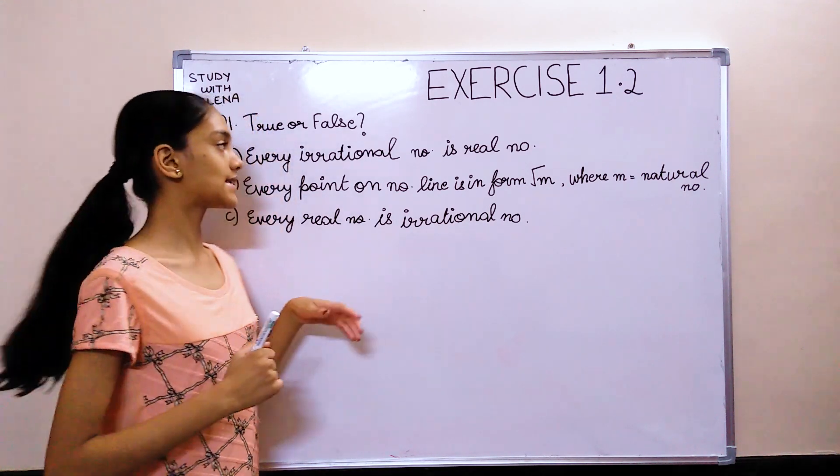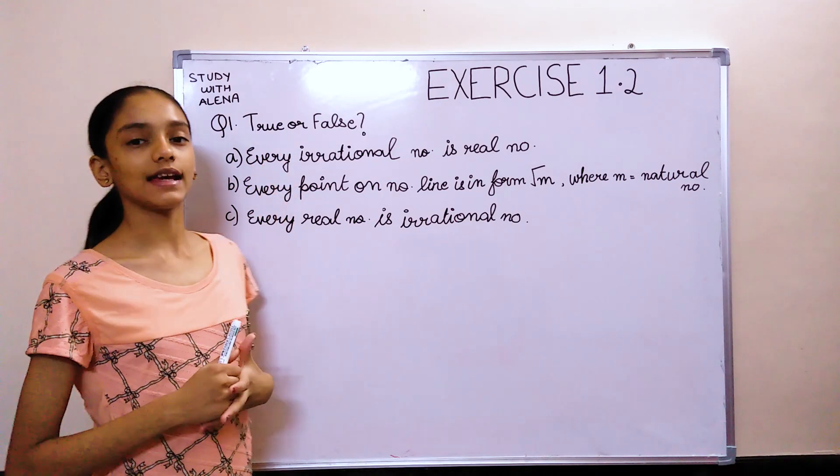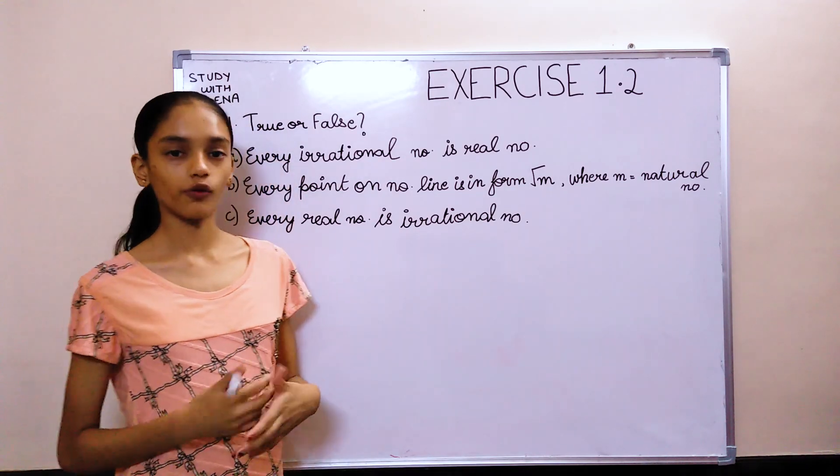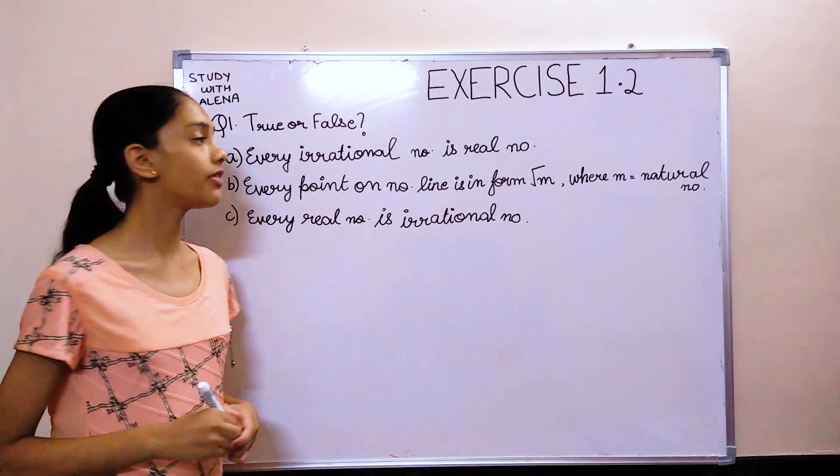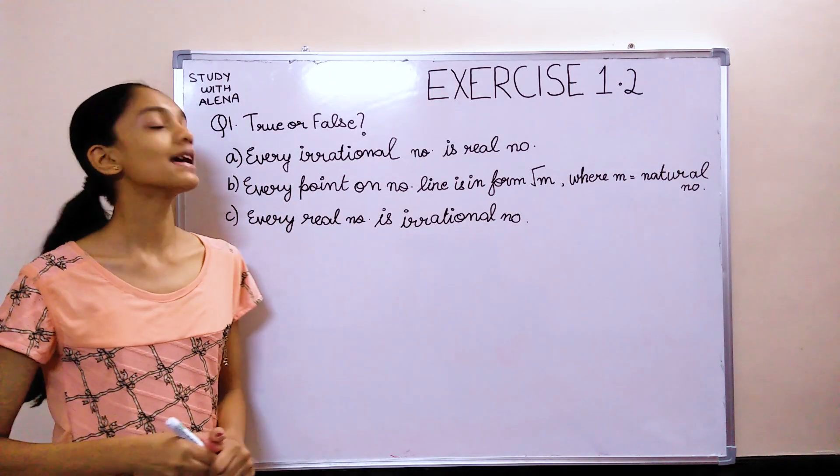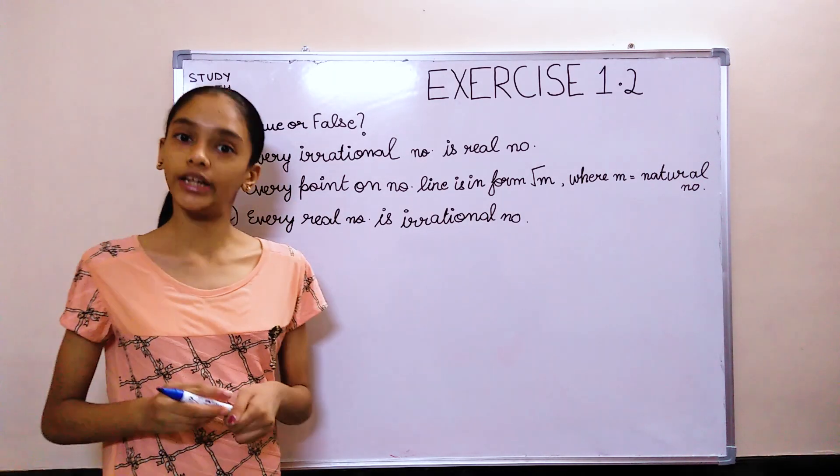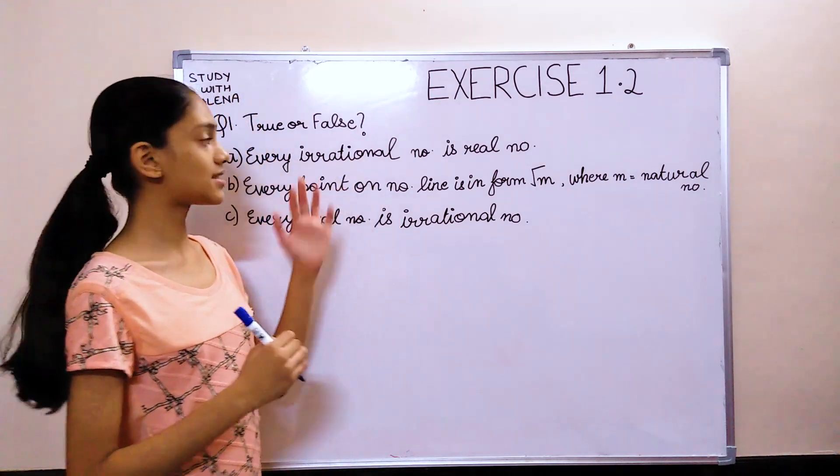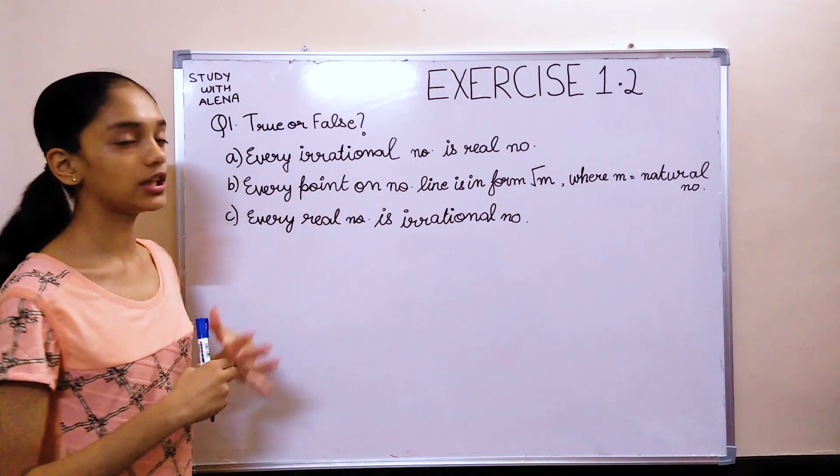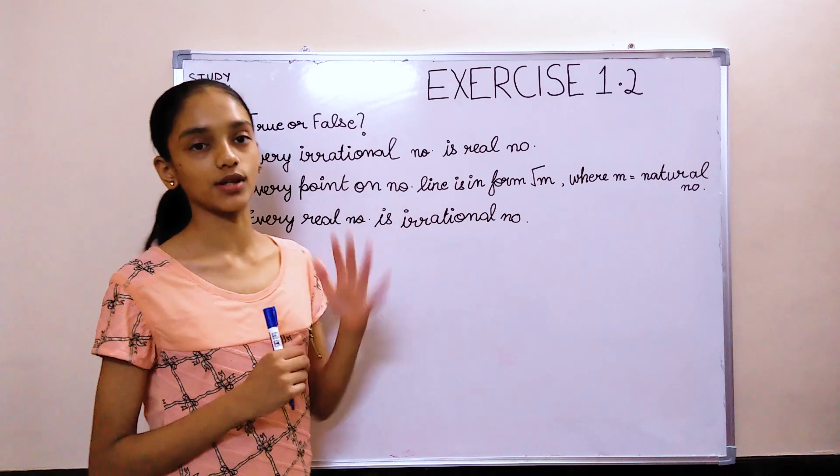The first question of Exercise 1.2 is, state whether the statements are true or false and justify your answer. The first question says, every irrational number is a real number. Now, for justifying this statement, first we need to know what is an irrational number, what is a real number.